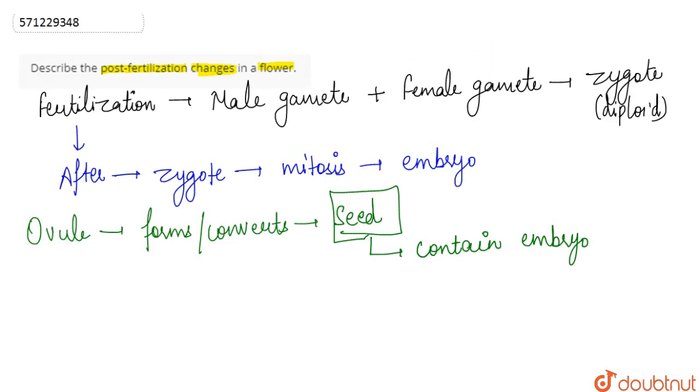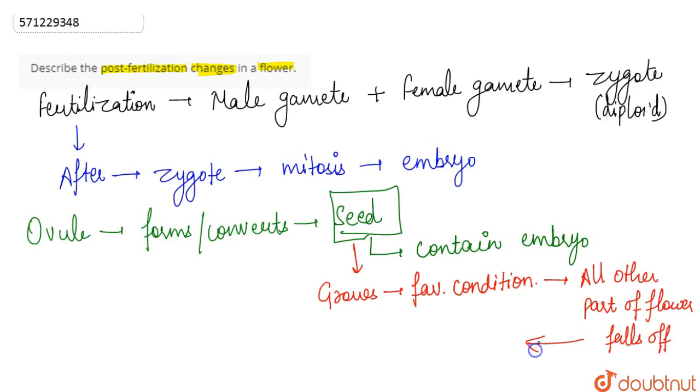Now as the seed further grows, when it gets favorable conditions and starts to grow, all other parts of the flower fall off. So when all these parts of the flower fall off, they fall off.